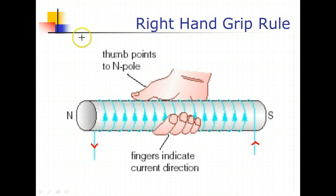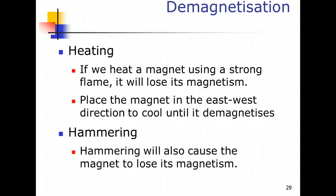Next, what do we look at? We look at demagnetization. Two methods: heating - if you do heat a permanent magnet using a very strong flame, it will lose its magnetism. Even better if you can place a magnet in the east-west direction to cool down. This will ensure that it is fully demagnetized. The other method is by hammering. A lot of sweat involved in these two methods. You really have to pound away or heat the magnets for it to lose the magnetized magnetic ability.